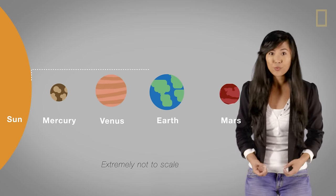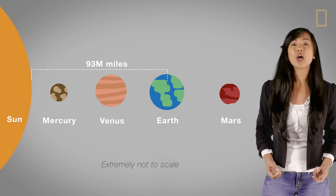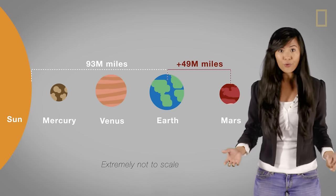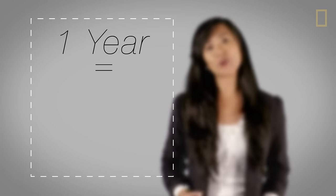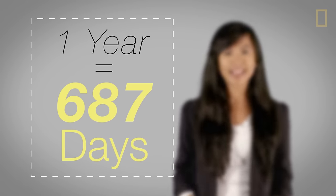While Earth is 93 million miles away from the Sun, Mars is some 49 million miles further away. The combination of added distance and the elliptical orbit of Mars means that one year on the red planet lasts 687 days.